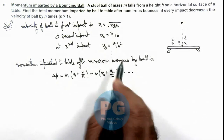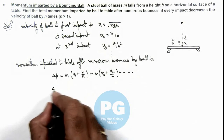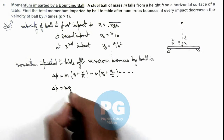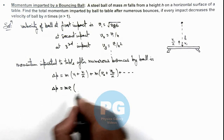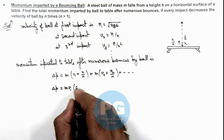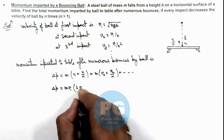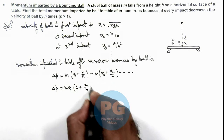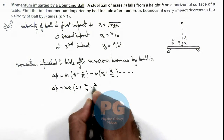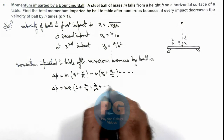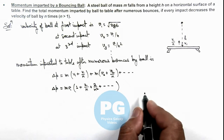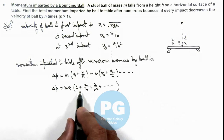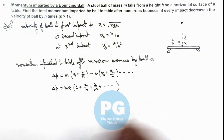In this situation we can take mv1 common. Inside we will have 1 plus 2/n plus 2/n² plus and so on, up to infinite times. As n is greater than 1, this will be a converging geometric progression.